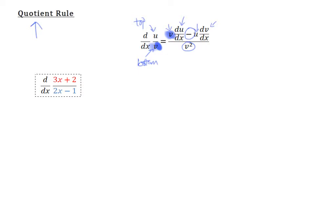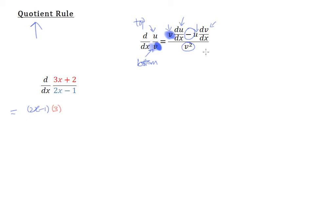Let's take a look at this example, where we're supposed to differentiate a fraction. I'll show you how to differentiate this using the quotient rule. There's a top and a bottom — the top is in red, the bottom is in blue. According to the formula, we keep the bottom, so we keep the 2x minus 1, and we differentiate the top. Differentiating 3x plus 2 simply gives us 3.